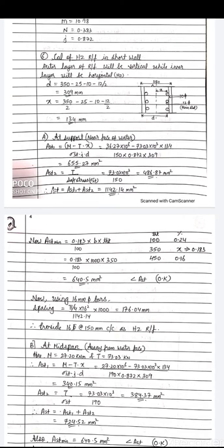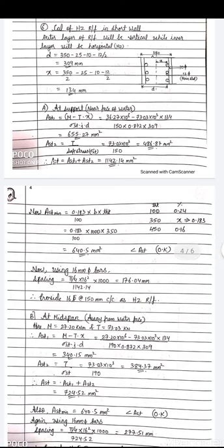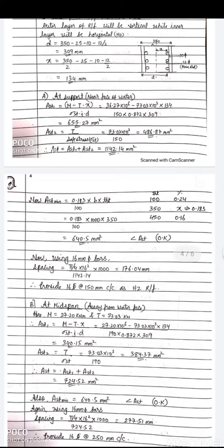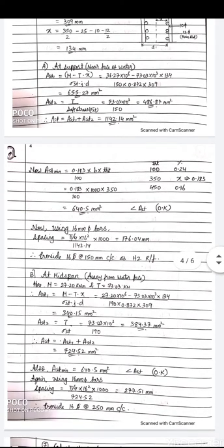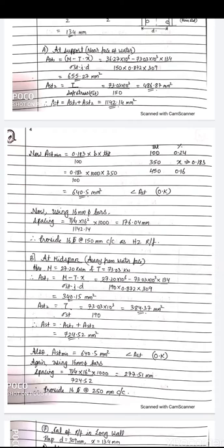Using 16 mm diameter bars, spacing = 176 mm. Provide 16 mm Tor @ 150 mm c/c as horizontal reinforcement near water face. Away from water face (at mid-span): M = 27.2 kN·m, T = 73 kN.